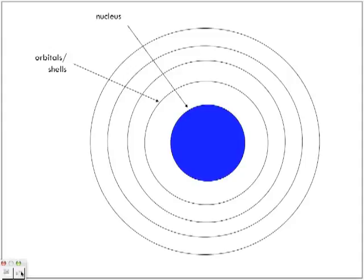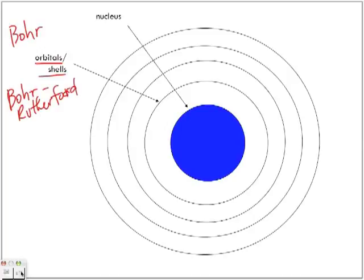Keep in mind that when we refer to orbitals and shells, we are using the Bohr-Rutherford model or diagram, where we draw it as such. At the senior chemistry level this model is considered incorrect, but it is what we use here.